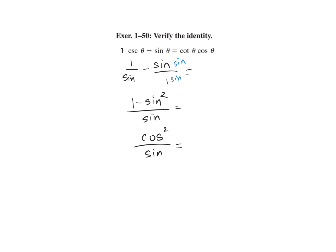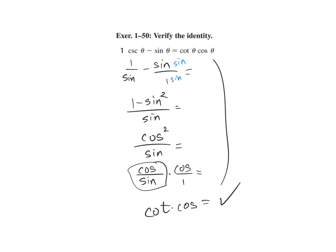1 minus sine squared is nothing more than cosine squared over sine. So now we split this into cosine over sine times cosine over 1. Cosine over sine is cotangent, and then we already have our cosine. That equals what we have on the right side, so we just verified it.